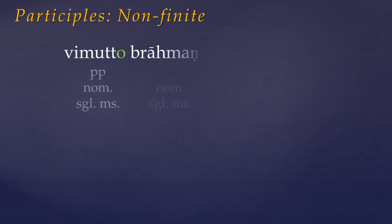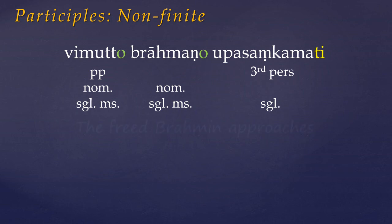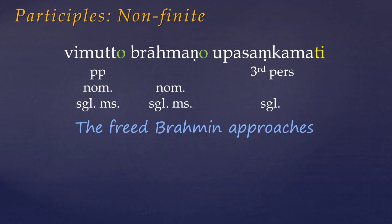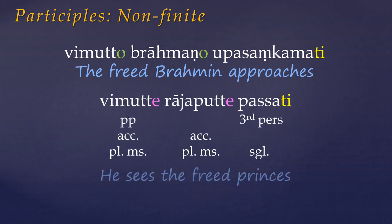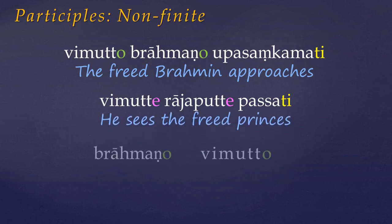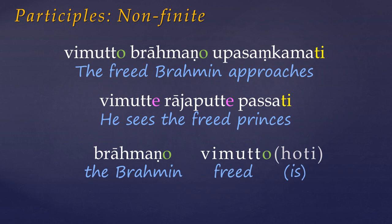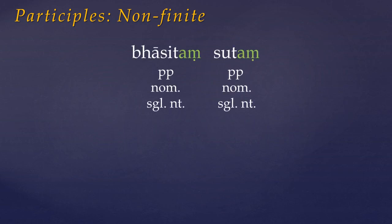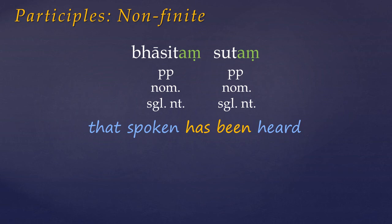Now we can move on to the non-finite cases. As adjectives, past participles agree with the number, case, and gender of the nouns they qualify. Here the past participle is merely qualifying the subject noun, and so is in masculine, nominative, singular to agree with 'brahmano'. They can also qualify object nouns, in which case they'll take the accusative. Occasionally there may also be a subject complement, where a copula or linking verb is implied. Finally, past participles — like any adjective in Pali — can also, on occasion, act as a noun, in which case they will always take the neuter gender. For example, 'bhasitang' is the past participle of the verb 'to speak', literally meaning 'spoken', but here it's been used as a noun to mean 'that which was spoken' or 'the speech has been heard'.